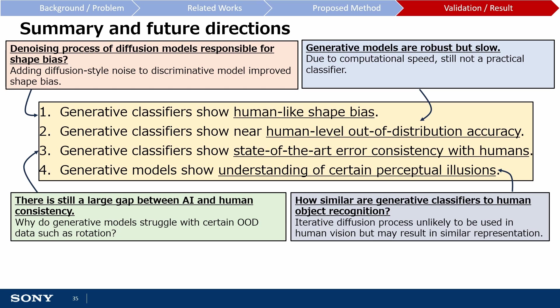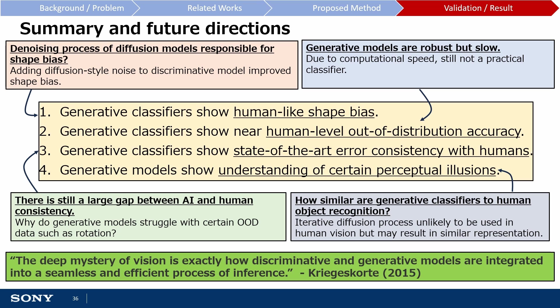Finally, generative models show understanding of certain perceptual illusions, though we should be careful about extrapolating this to the way humans understand perceptual illusions. It is unlikely humans use a diffusion-like process to understand objects, but perhaps we may rely on similar representations. While discriminative and generative models have been discussed as distinct entities, perhaps the key to understanding how humans display both fast and robust object recognition is through the unification of these approaches. Thanks for watching.